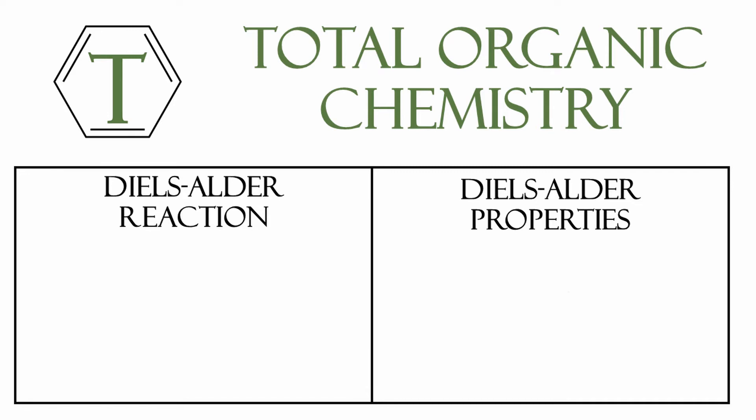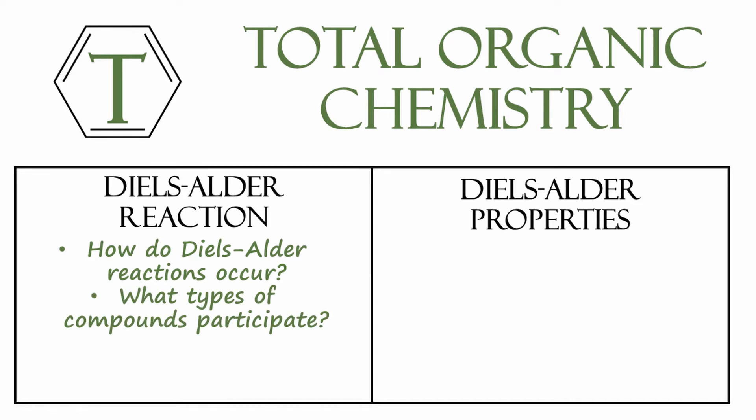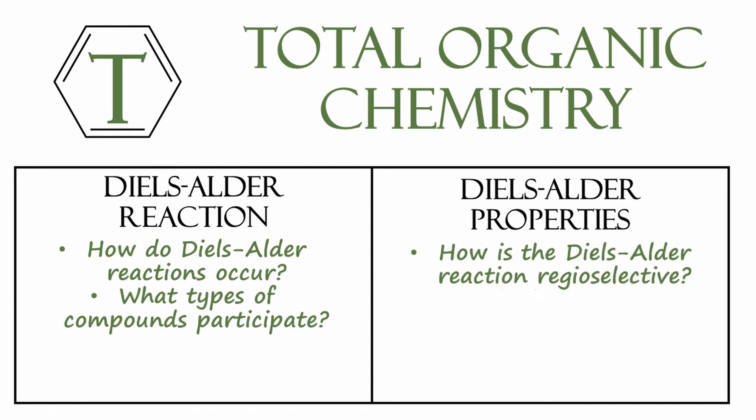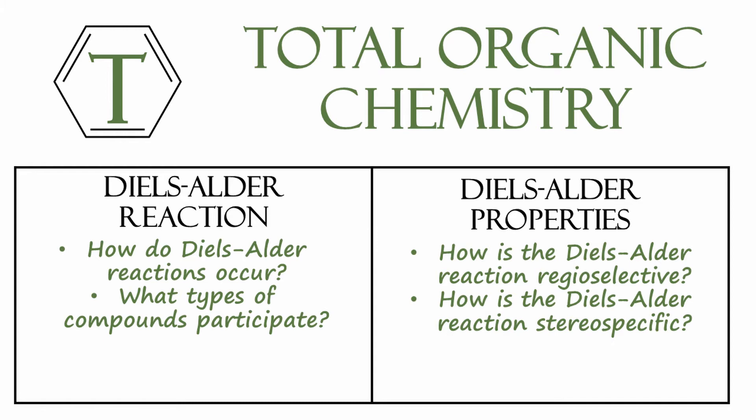By the end of this video, the questions you should be able to answer are: how do Diels-Alder reactions occur, what types of compounds participate, how is the Diels-Alder reaction regioselective, and how is it stereospecific. If you'd like an introduction to delocalized systems or to conjugated dienes, please subscribe to my channel and take a look at those videos I've uploaded on those topics.